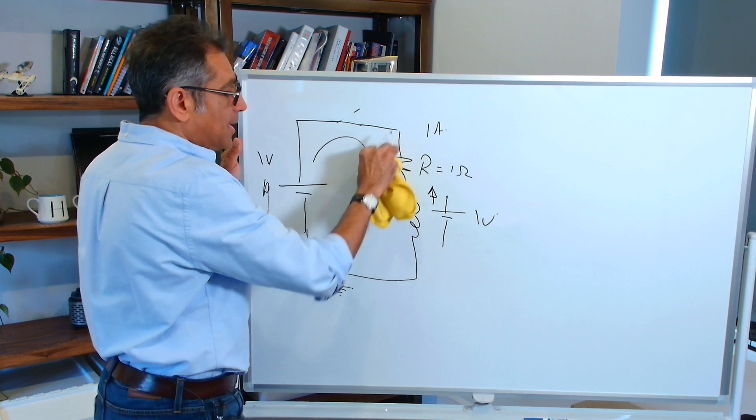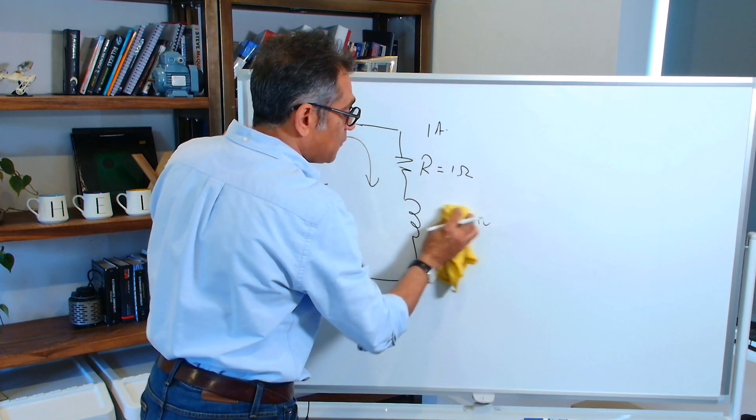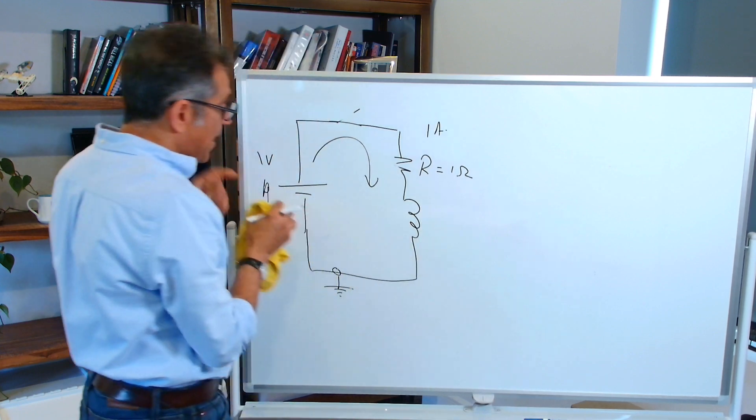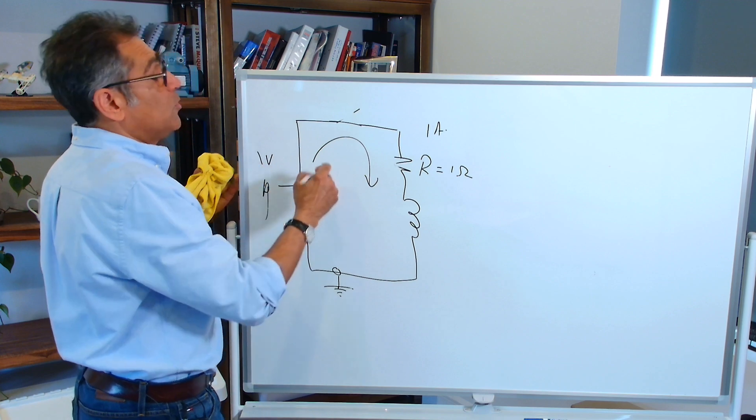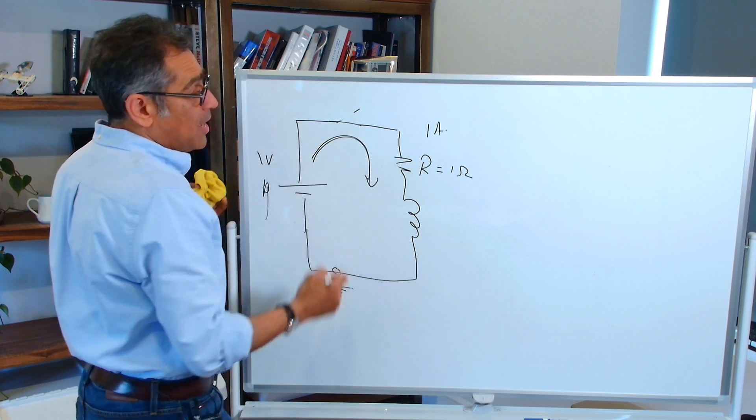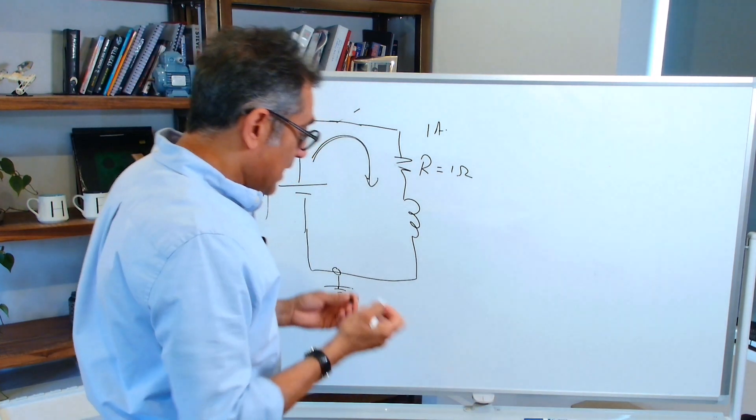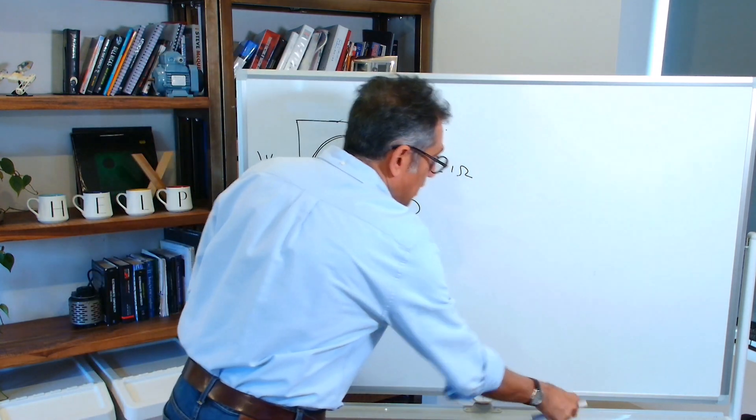Now obviously the inductor cannot hold on to this voltage forever. So after a while the battery, which has got infinite energy in our case if we assume that it is an ideal source, will try to push the current. And what happens is, this is textbook what you study at university.